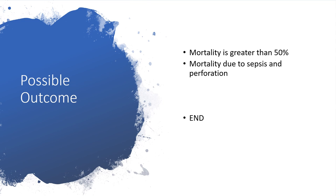Possible outcomes: mortality is very high — greater than 50% — which is why this is such a serious matter. Mortality is mostly due to sepsis and intestinal perforation. My thoughts go out to all affected patients. To conclude, typhilitis — also known as neutropenic enterocolitis — involves a low level of neutrophils and inflammation of the colon. Please subscribe to my channel so that you receive notifications whenever I release new presentations. Thank you.